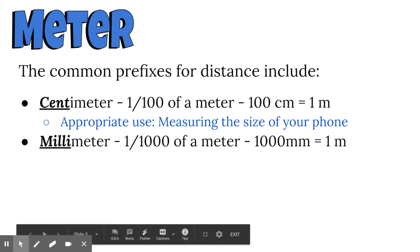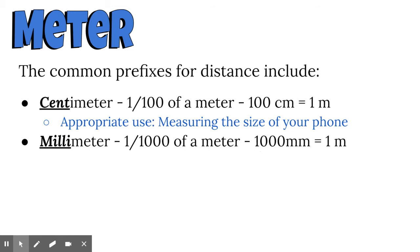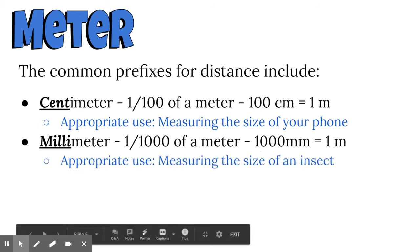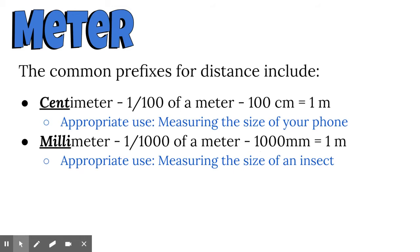The prefix milli means there's 1,000 of them in the base unit. One one-thousandth of a meter is equal to one millimeter. There are a thousand millimeters in one meter. This is really appropriate for really small things. If we're measuring the size of insects or other very small objects, millimeters would be really appropriate. If we wanted to measure my height in millimeters, that'd be a little bit silly because that's so many millimeters.